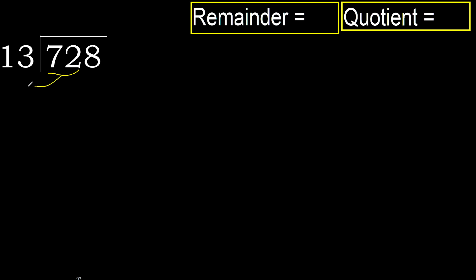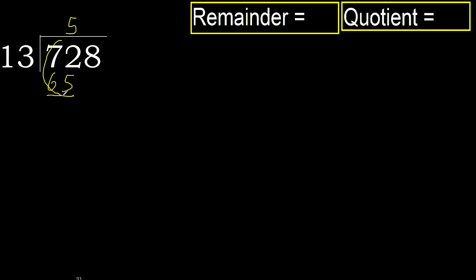72 is not less, therefore work with 72. 13 multiplied by which number is nearest to 72 but not greater? 13 multiplied by 6 is greater; multiplied by 5 is 65, is not greater. Ok, subtract. 72 minus 65 is 7. Next.